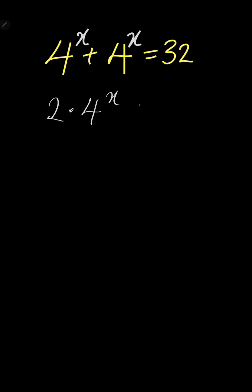So this is equal to 32. Divide both sides by 2. So you have that 4 power x is equal to 32 divided by 2 is 16.